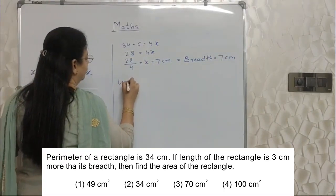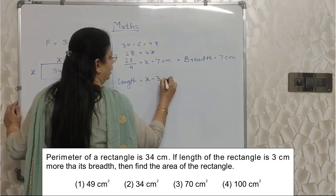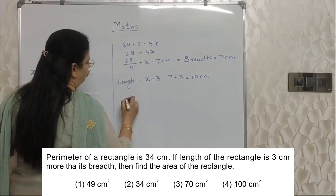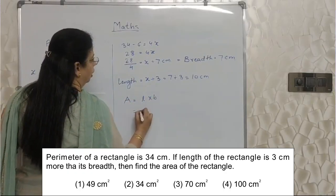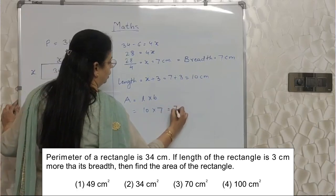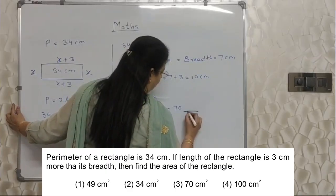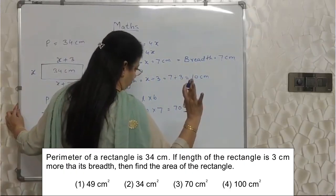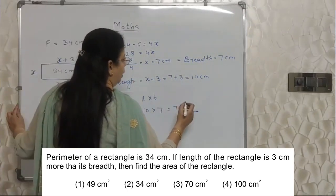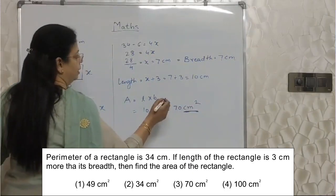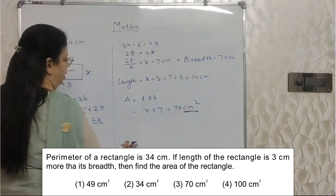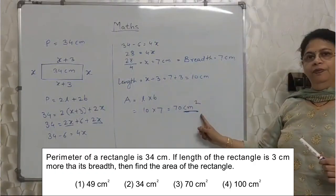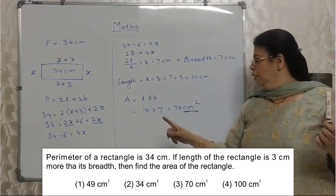So how much will the length be? Length is x plus 3, that is 7 plus 3, which is 10 centimeters. Once we know the breadth and the length, it is so easy to find out the area. Area is length into breadth — 10 times 7 equals 70. Now, what you write after this will decide whether you are going to take 2 marks in your pocket or not. Because area units are always in squares.